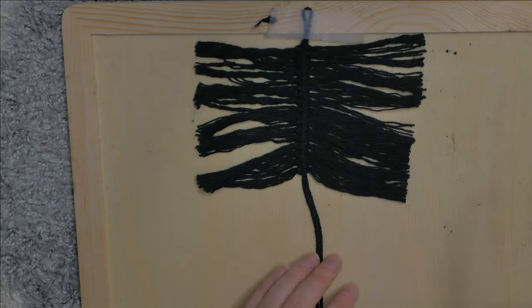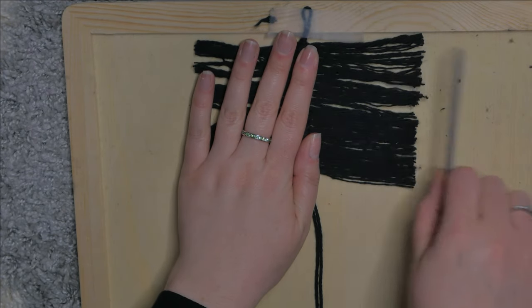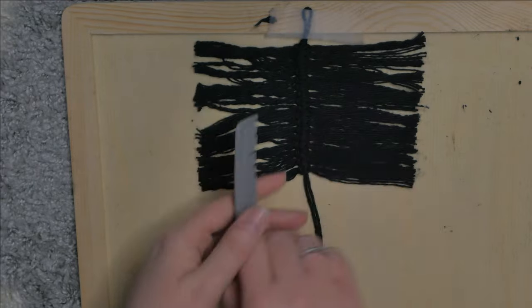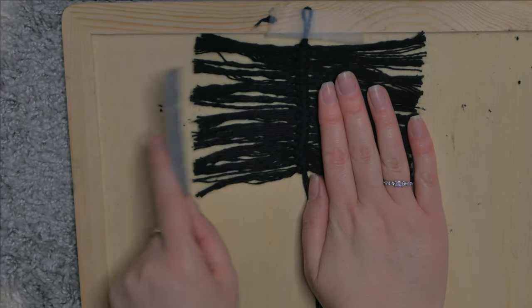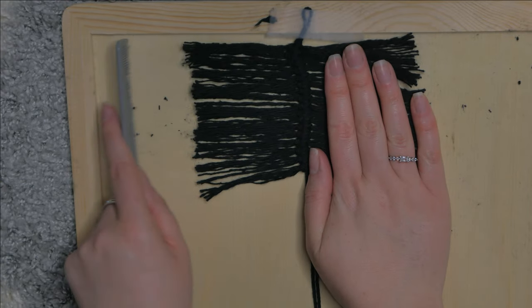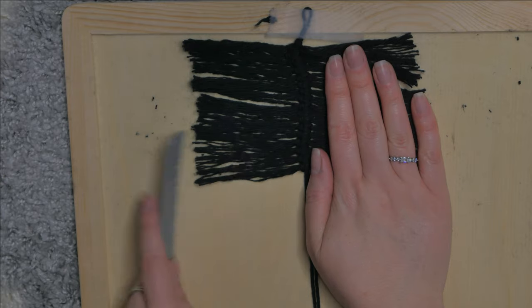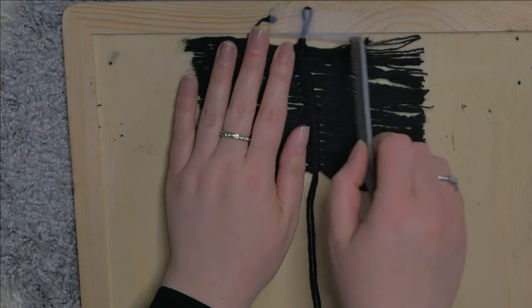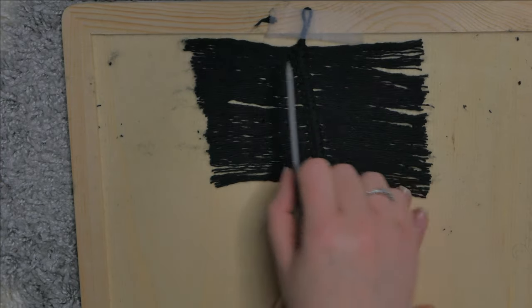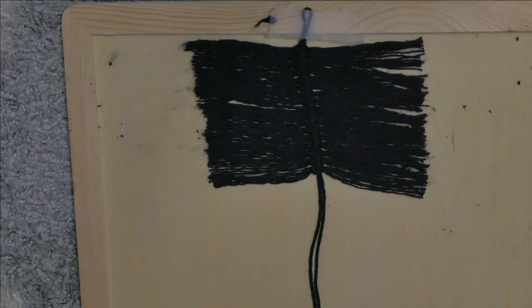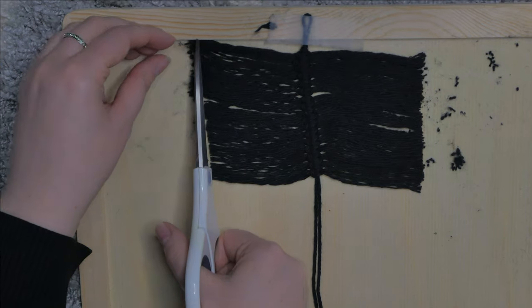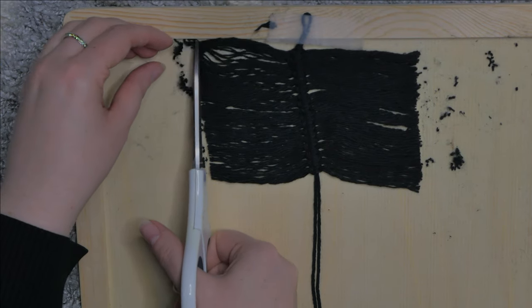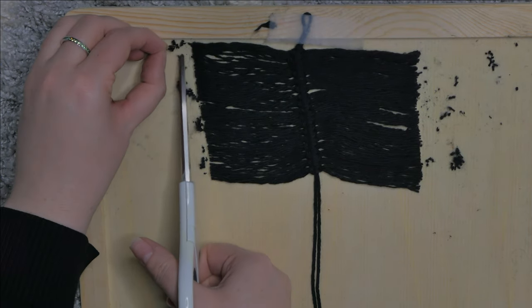So taking your comb again, just continue to comb out your strands. And you're going to be repeating this process a little bit longer until you get your feather the way that you would like it, and you might need to trim up your piece again just on the edges there.